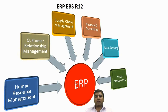ERP consists of applications named HRM, Supply Chain Management, Customer Relationship Management, Finance & Accounting, and Manufacturing & Project Management. ERP uses a Relational Database Management System (RDBMS) as a backend, where data is stored in tables in the form of rows and columns and used as and when needed.